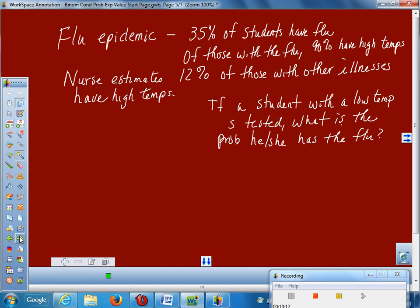In this particular one, we have a flu epidemic at a school. 35% of the students have the flu. Of those who have the flu, 90% have high temps. But then there's people who don't have the flu and 12% of those people who have some other illness, there's a 12% chance that they have a high temperature. So my question is what would you draw a tree of? So they're intending for you to do flu and other illnesses.